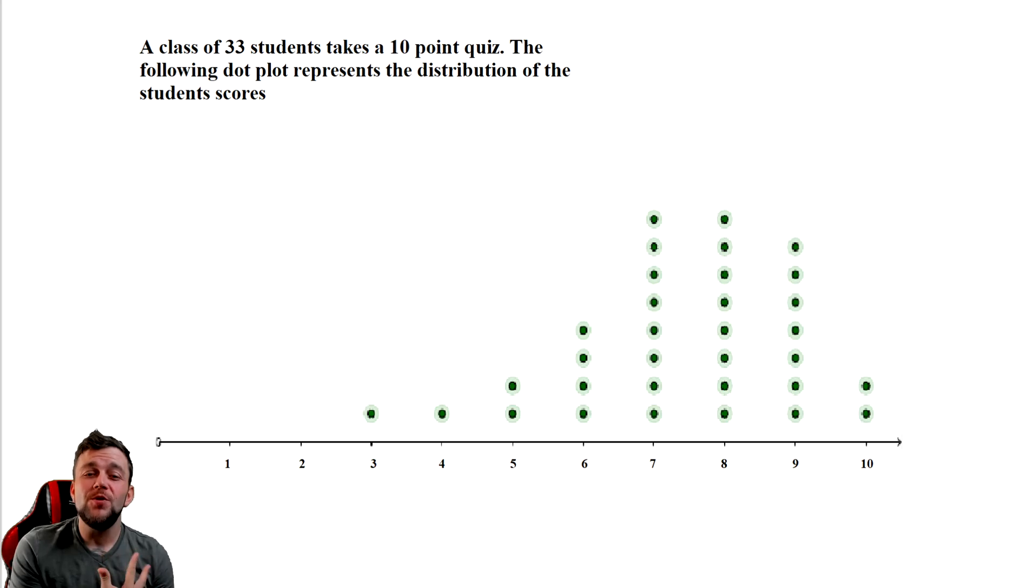It says a class of 33 students takes a 10-point quiz. The following dot plot represents the distribution of students' scores. What that means is that each one of these green dots represents a student that took the quiz. This one person on 3 scored a 30% on this quiz. The two people on 10 scored 100% on this quiz. One thing I would like for you to make a mental note of with this statistical diagram and the paragraph above is that there are 33 students involved.